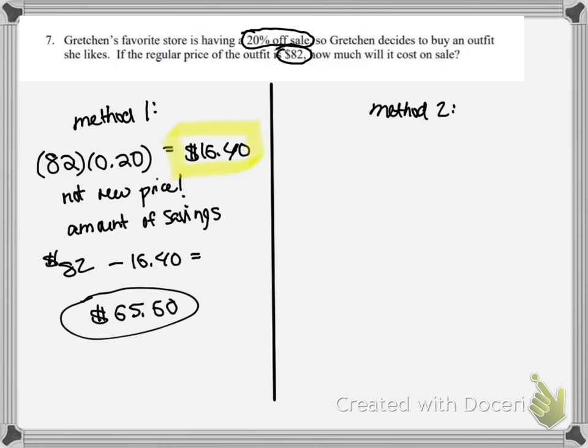The other way to think about it is you could have 100%. If this thing were not on sale, she would have to pay 100% of the price. Well, she doesn't have to pay for 20% of it. So what is 100% minus 20%? 100% minus 20% is 80%.